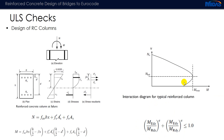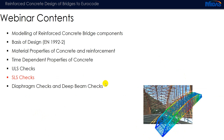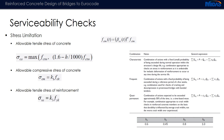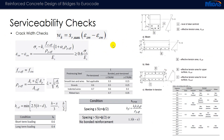Moving on to SLS checks: serviceability checks cover three types — stress limitation, deflection check, and crack width check. The stress limitation in the software is checked for allowable tensile stress of concrete, allowable compressive stress, and allowable tensile stress of reinforcement. Ideally this should be checked at each construction stage. Crack width checks depend on the exposure class of concrete, the reinforcement diameter used, and the nominal cover, all based on Eurocode 2.